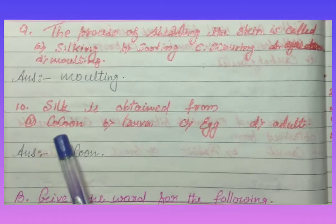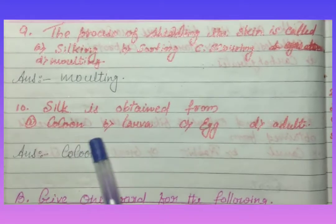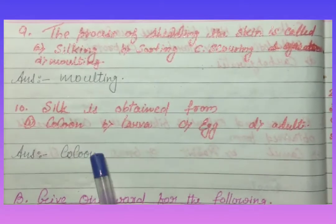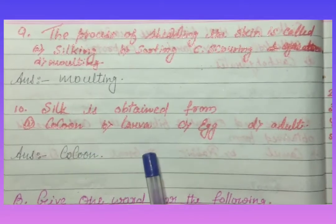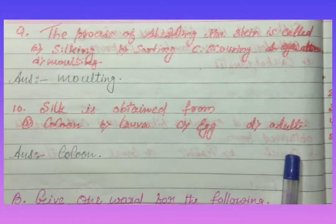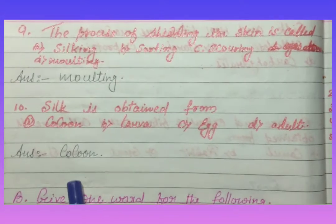Next question: silk is obtained from cocoon, larva, egg, or adult. The answer is cocoon.